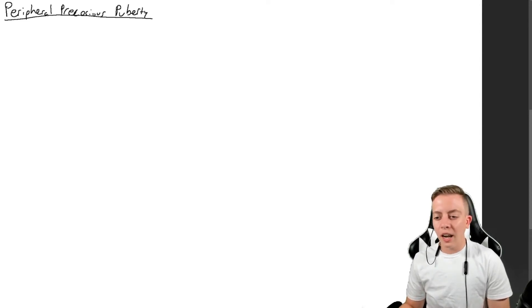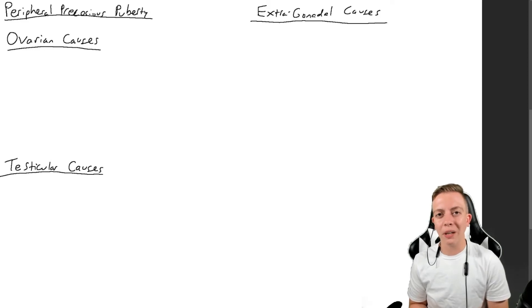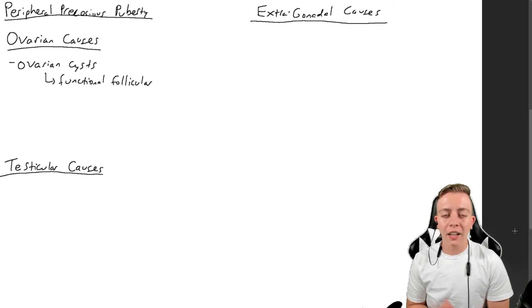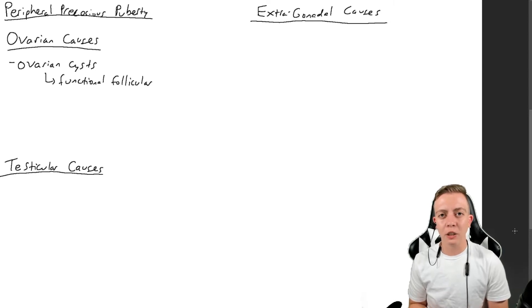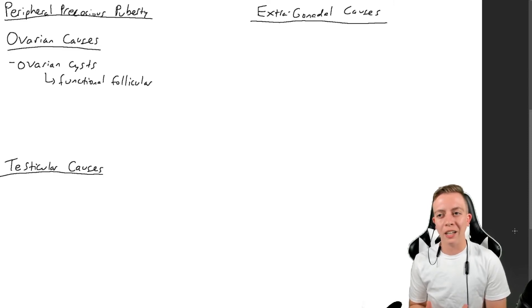The three categories are ovarian causes, testicular causes, and extra-gonadal causes. Ovarian causes occur in people who have ovaries, typically assigned female at birth. The most common ovarian cause is ovarian cysts, and the type most likely to cause precocious puberty is a follicular cyst, because these are often functional and secrete estrogen. This excess estrogen can cause breast development at a young age, and as the cyst degenerates, the drop in estrogen can trigger vaginal bleeding, mimicking early menstruation.